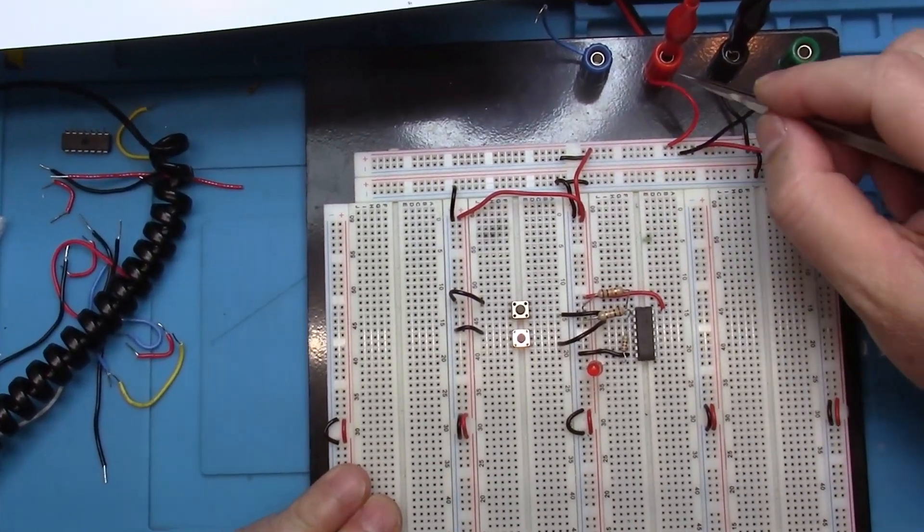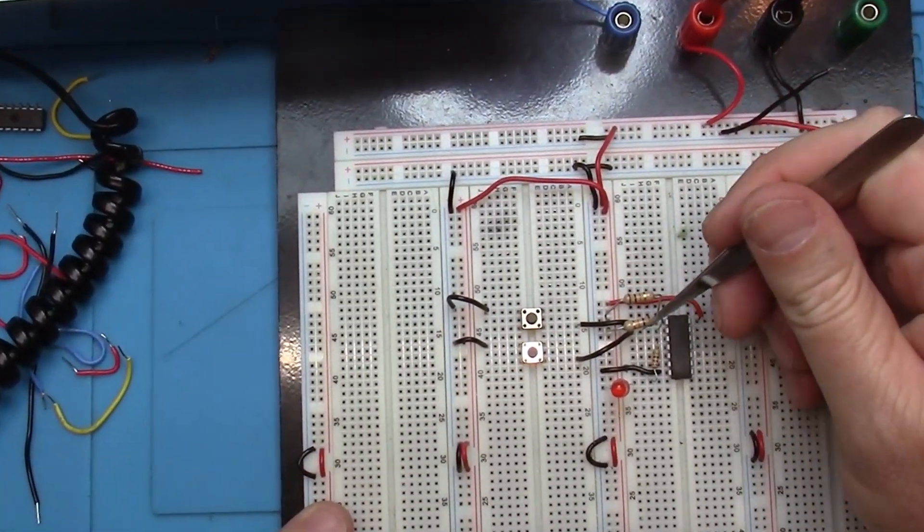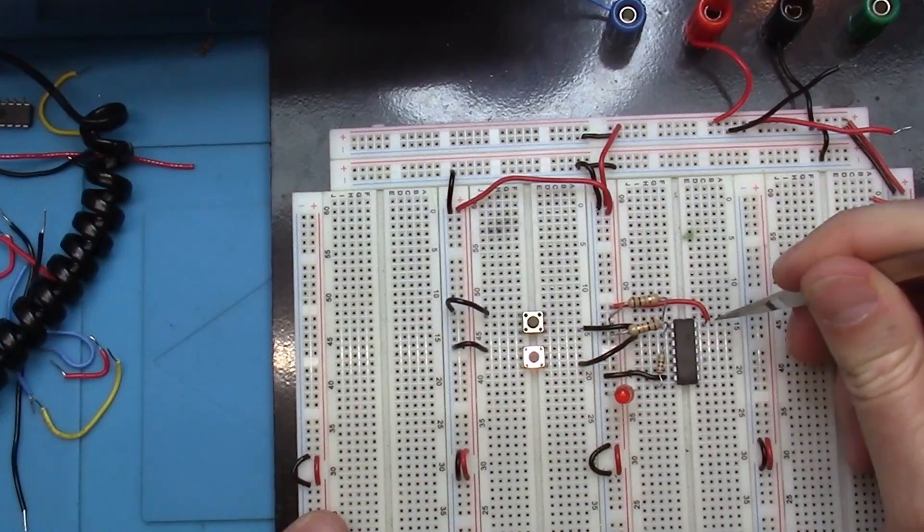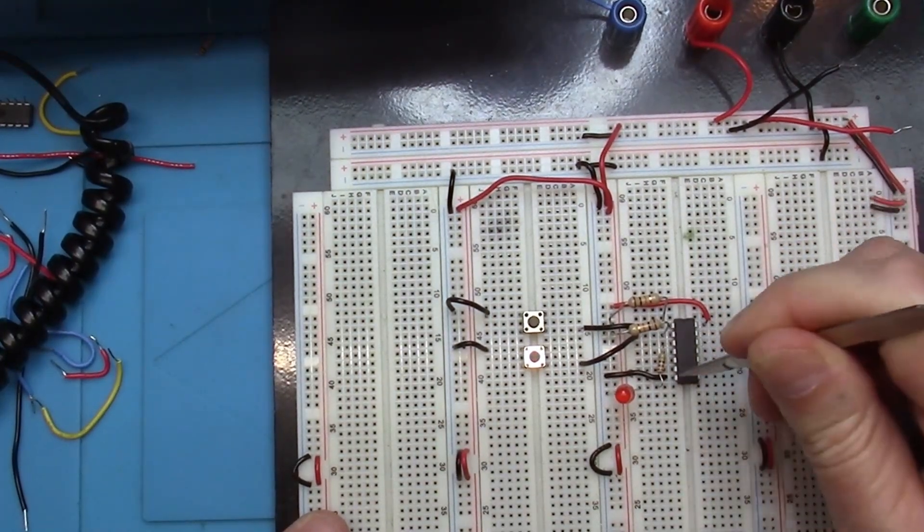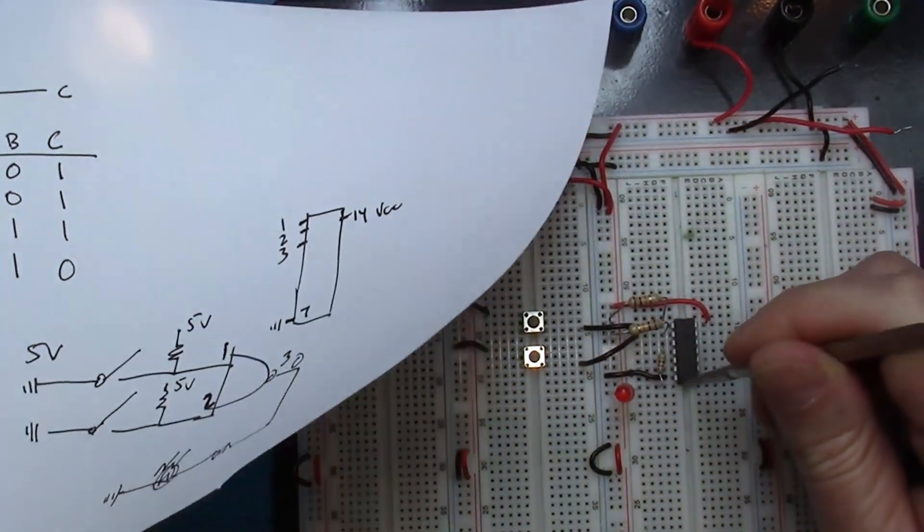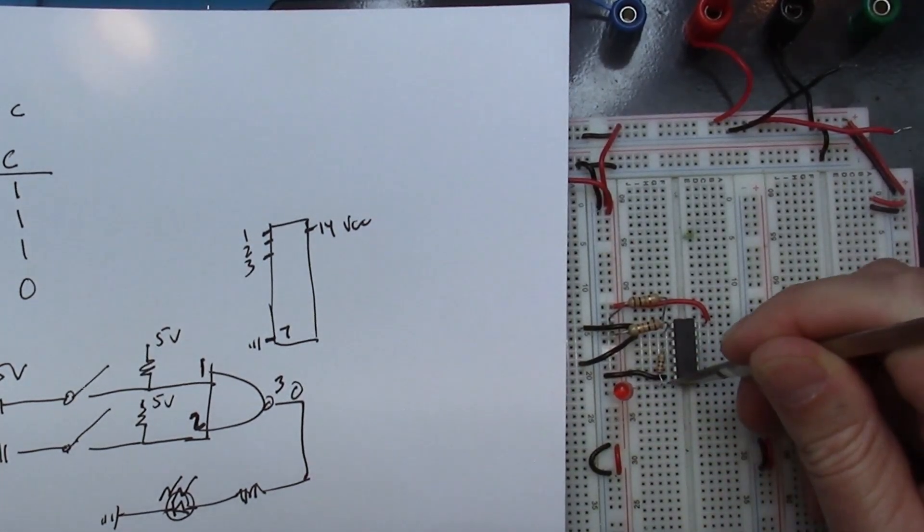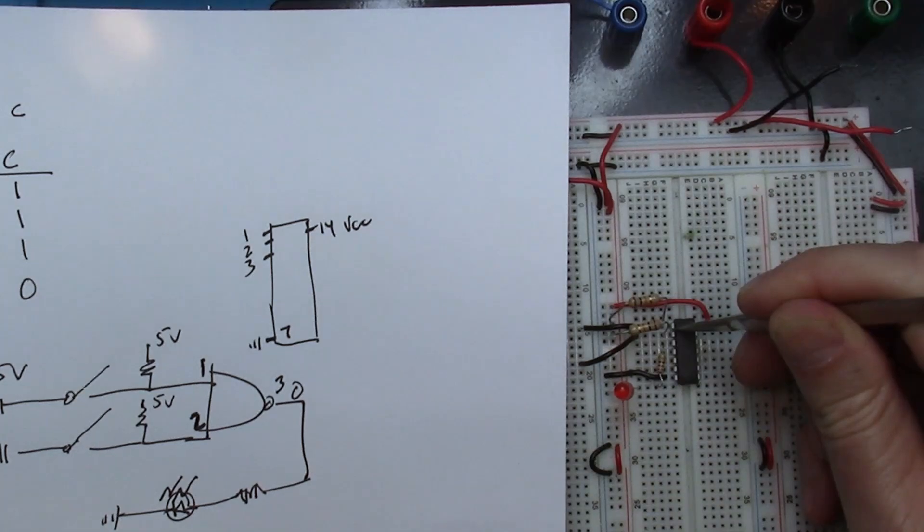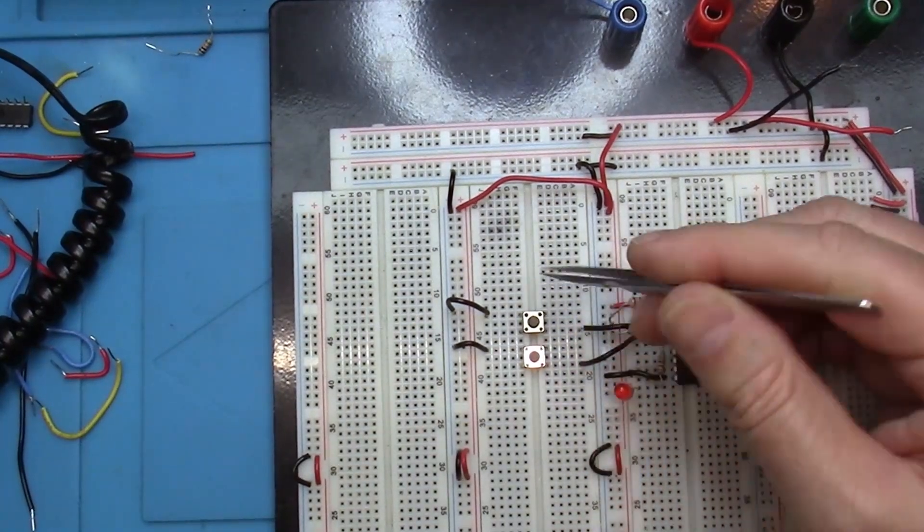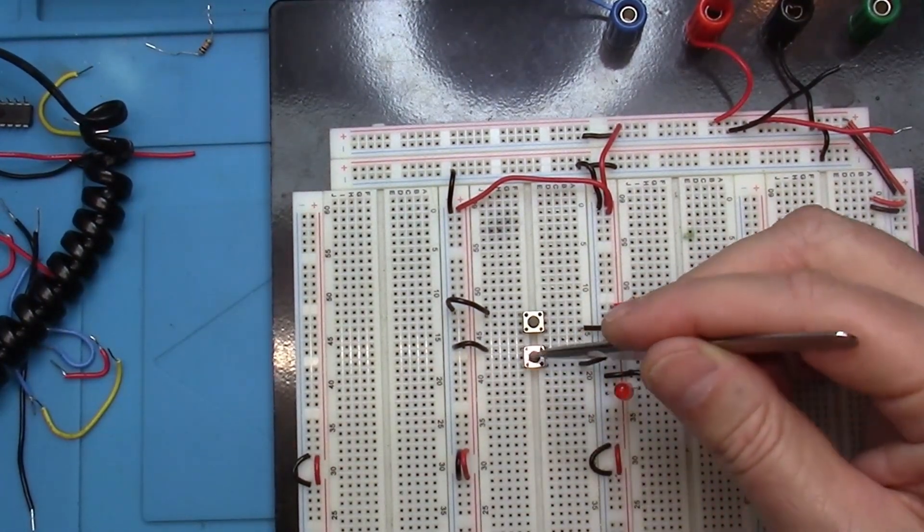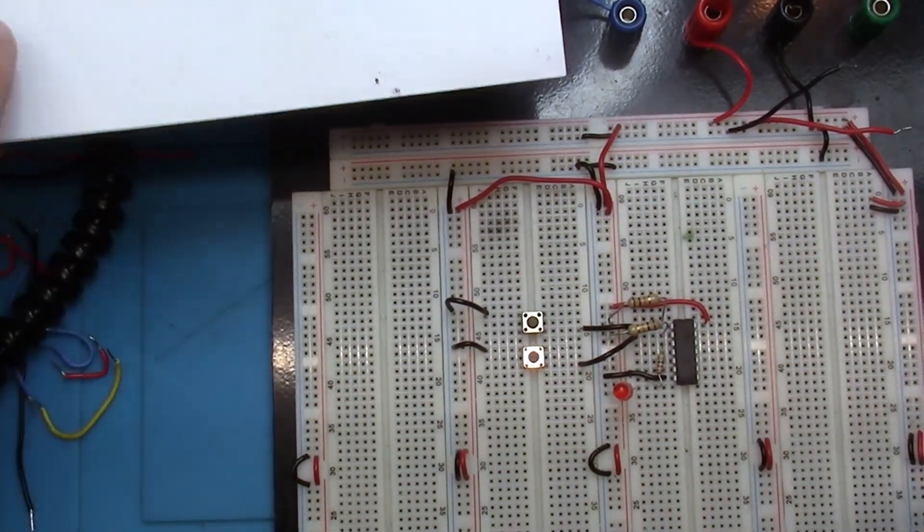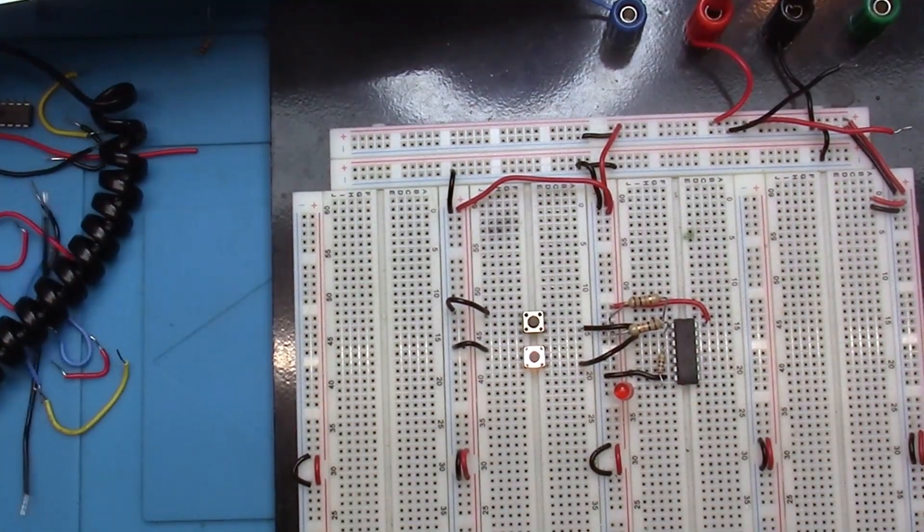We've got 5 volts coming in. We've got, these are the two pull-ups. They're going to this rail right here which is 5 volts. The IC, we've got pin 14 is VCC, which we can kind of maybe see here. Pin 7, which is here, is going to ground. Here is our LED tied to a resistor to output 3. And here's 1 and 2 to these pull-ups. But they're also tied to the switches that go to ground. So when we press them, they go to ground. Right now they have a high voltage on them. How do we know they have a high voltage? Well, let's grab our logic probe.